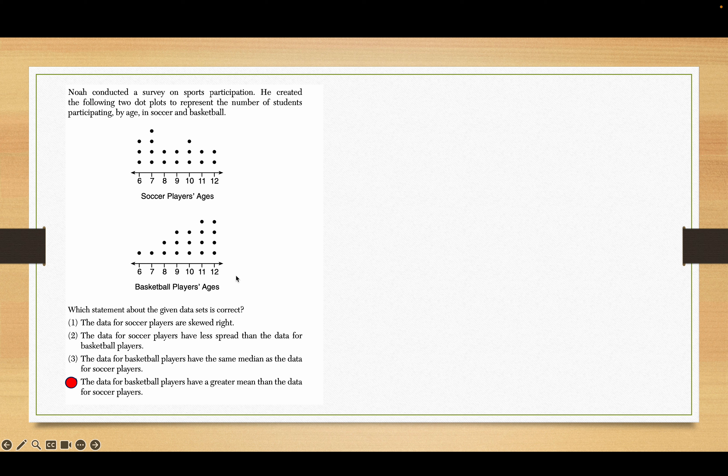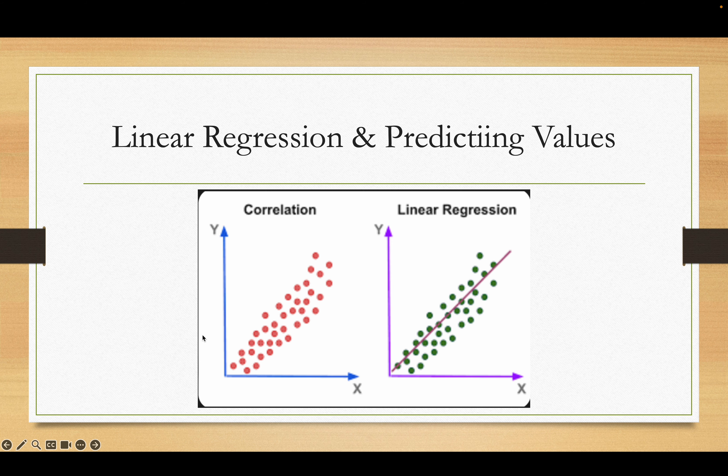Now let's talk about correlation and linear regression. Correlation is how closely things are linked up. Here's a scatter plot right here - this would be a strong positive correlation. It's positive because it's going up and they're pretty grouped together.